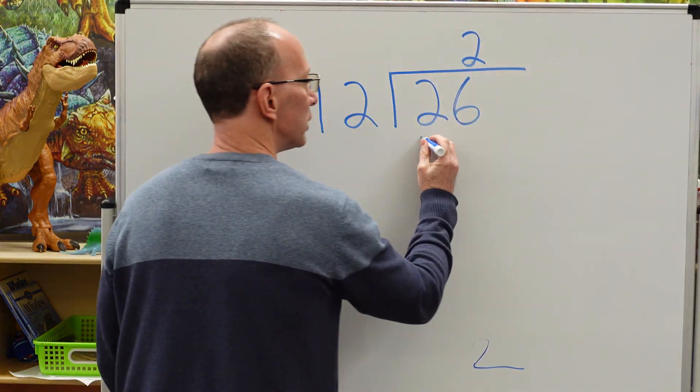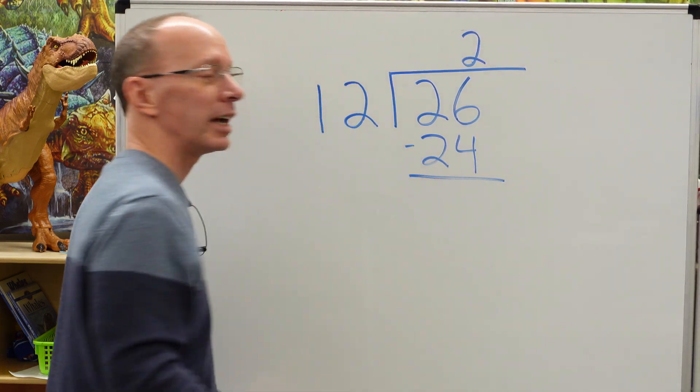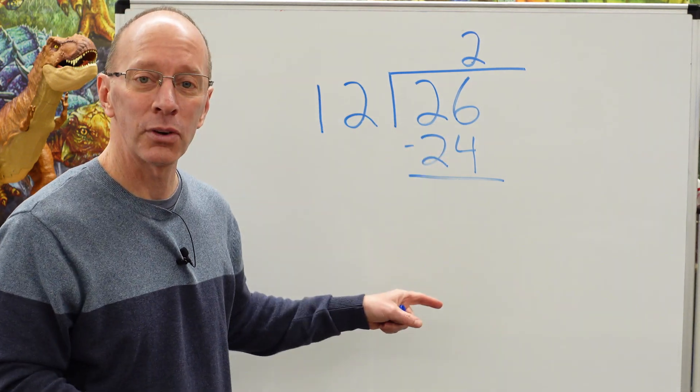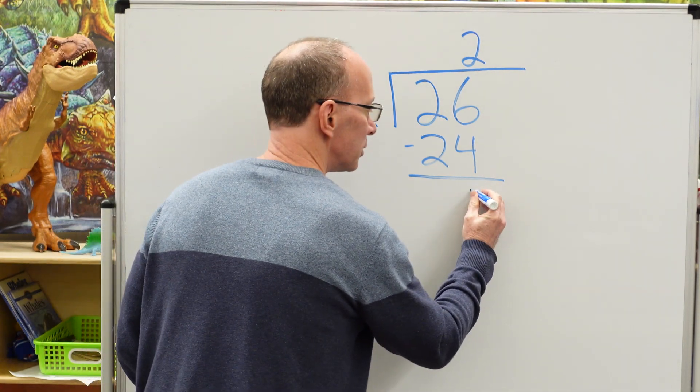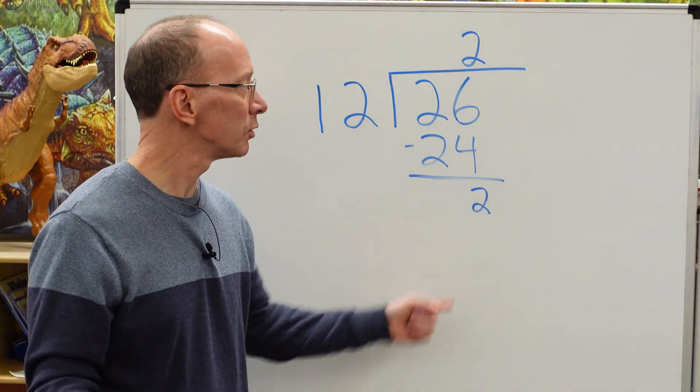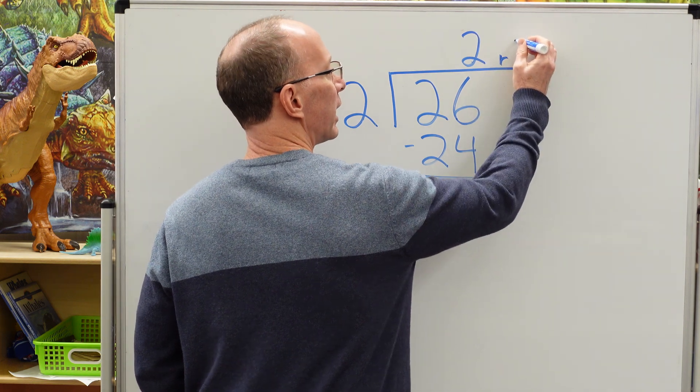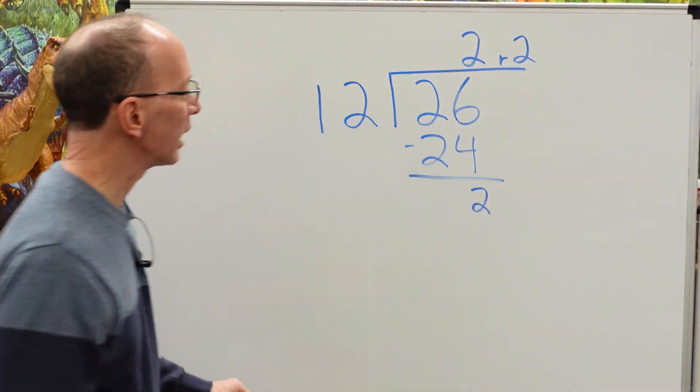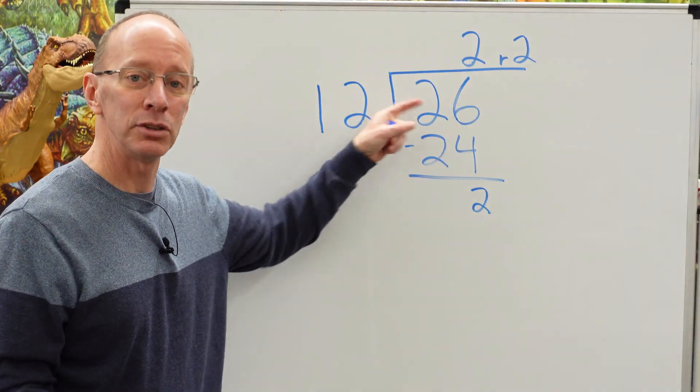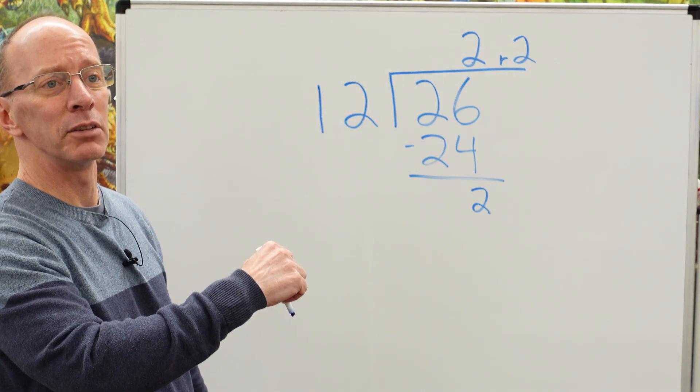2 times 12 is 24. Now I'm going to subtract. It looks like I'm going to have a remainder. 6 minus 4 is 2. This is called our remainder, that's what's left over. So we put that up here. I put an R, a small R and a number 2. That means I'm going to have two groups of 12 with two left over. Maybe I'll have two groups of 12 cookies and then there's two left over. Hey, I can give you two cookies over there, Mr. Monkey.